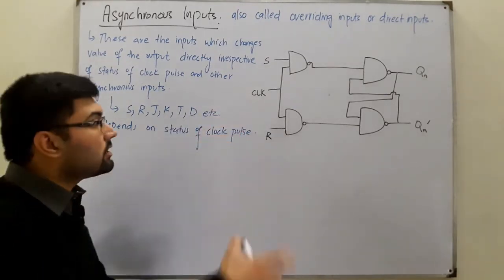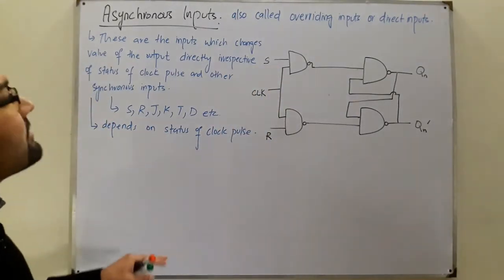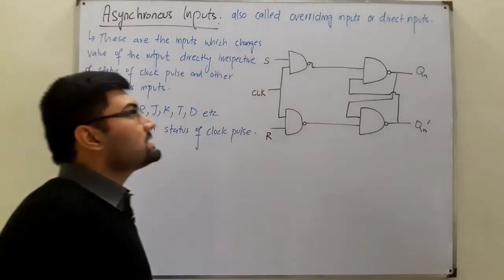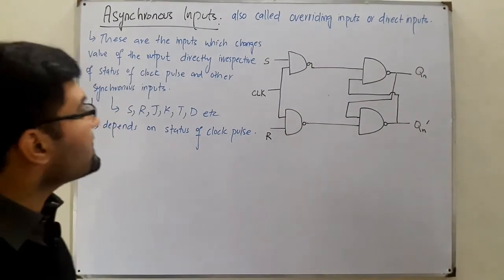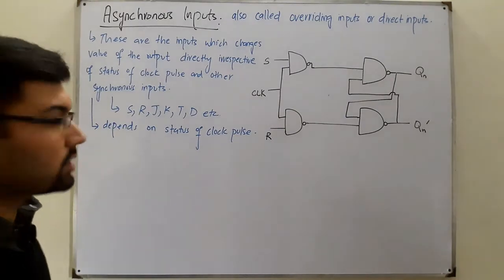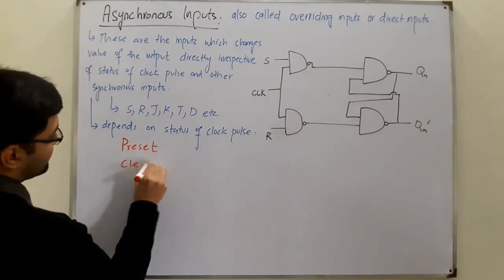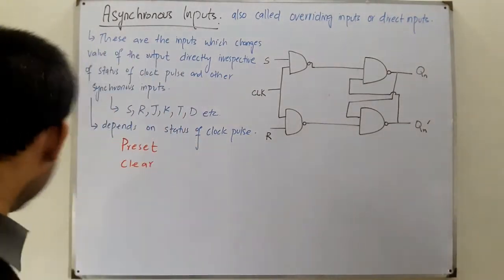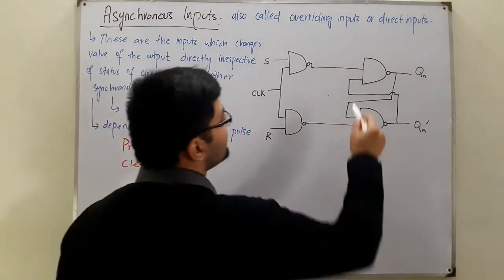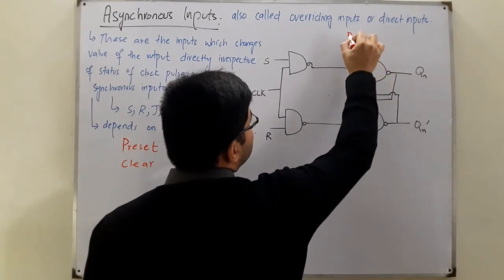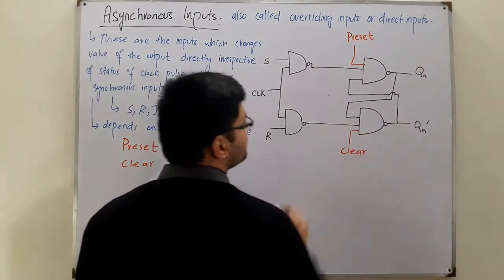Asynchronous inputs do not depend on either the clock pulse or the values of the synchronous inputs. Therefore they are called overriding inputs or direct inputs, because they just override everything and change the value of the output directly. Generally in flip-flops these asynchronous inputs are two: one is preset and the other one is clear. They are applied at the final NAND gates — this is your preset signal and this one is your clear signal.